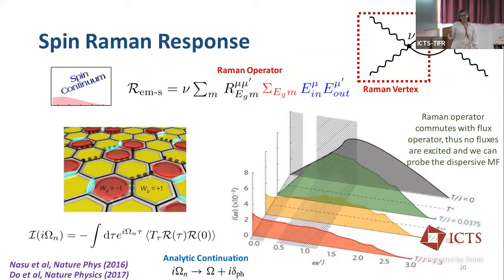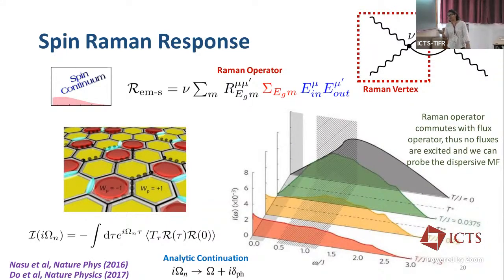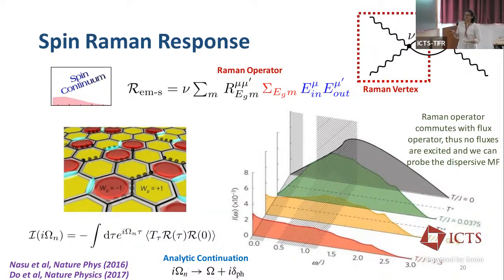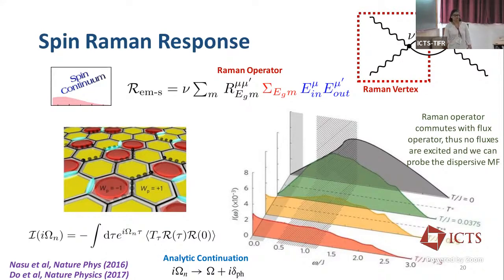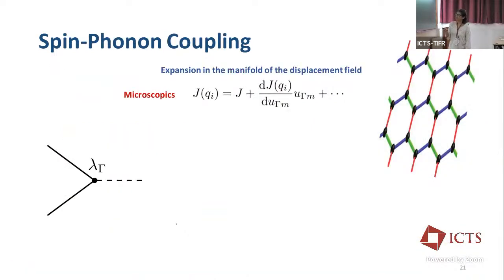As we increase the temperature, the fluxes start getting disordered, and the spectrum of the Majorana fermion in those flux sectors changes. So we expect the continuum will also change with temperature. Because the Fano asymmetry arises from the interaction with this continuum, the Fano asymmetry is also expected to change with temperature.